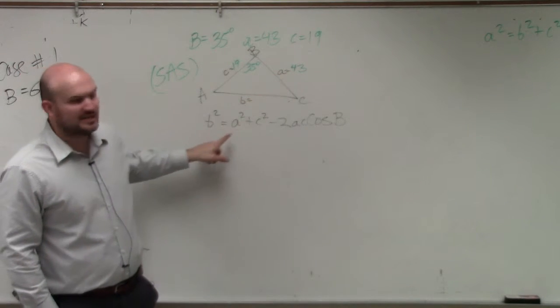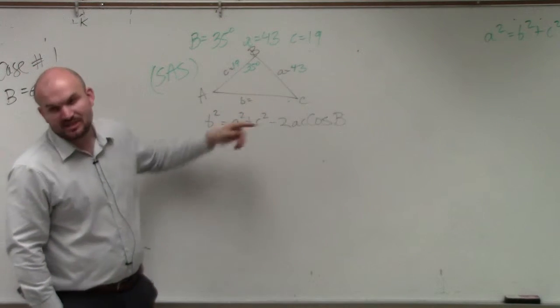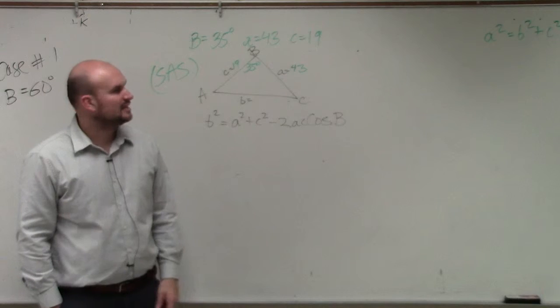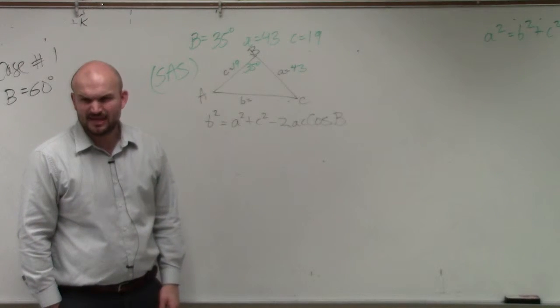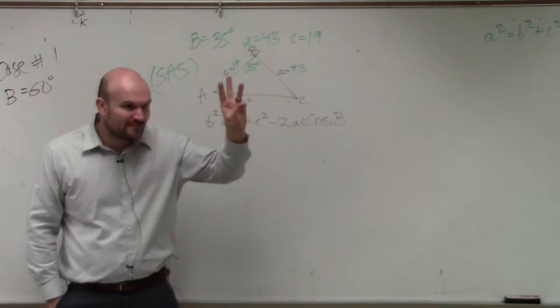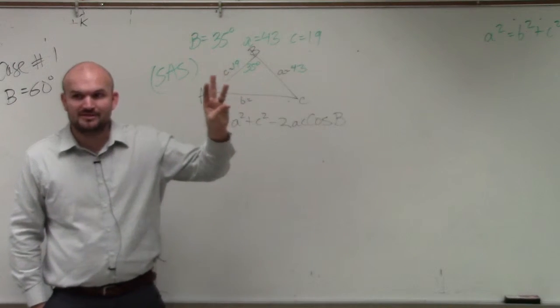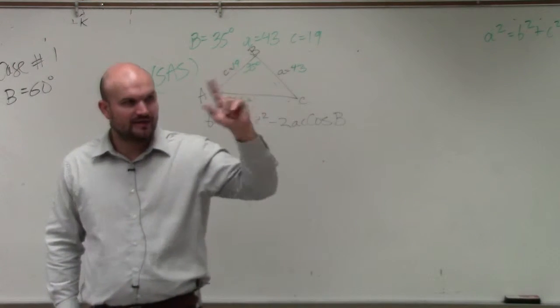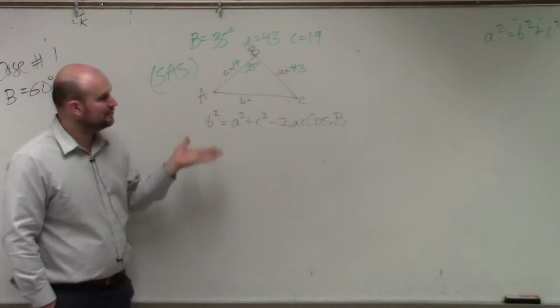Wherever there was an a up there, I replaced it with a b. Wherever there was a b, I replaced it with an a. That's all I did. I just swapped the a's and the b's. So there's technically three cosine formulas, law of cosine formulas, but in reality there's really only one. It's just a relationship of a, b, and c that you change around.